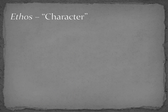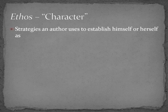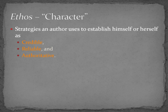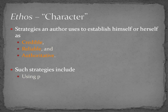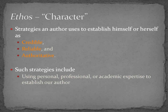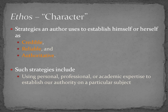Ethos, derived from the Greek, means character. We use ethos to describe the strategies by which an author establishes his or her credibility. Audiences are more likely to be persuaded by an author they believe is credible, reliable, and authoritative. An author might write only on issues on which he or she is an expert. For example, if I'm a trained zoologist, I probably wouldn't establish a credible ethos if I published a piece on meteorology. Or if I'm a child care specialist, I probably wouldn't establish a credible ethos by writing about chemical reactions. Thus, our backgrounds — personal, professional, and academic — can be central to helping establish our ethos.